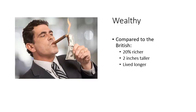Americans were also getting wealthy. A lot of the reasons people came to the colonies was to try to create a life of their own — to start living out the idea of the American dream. And that was happening. Compared to the British, they were 20% richer, two inches taller, and they lived longer. That shows they were eating and living a healthier life, getting more food and a richer variety of food — more well off than having left England and other European countries.